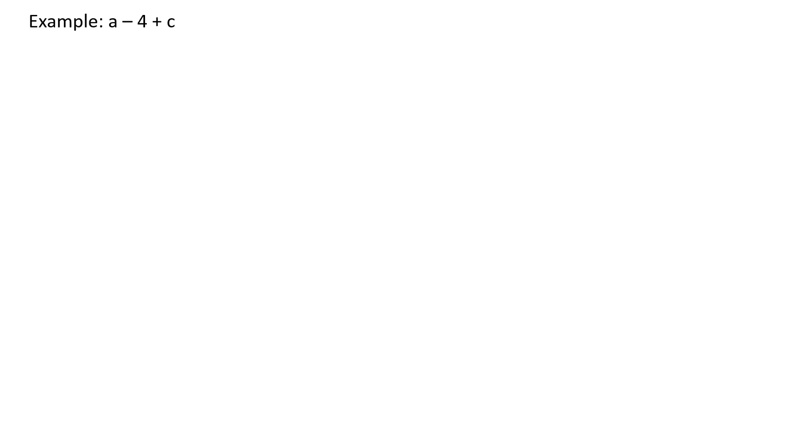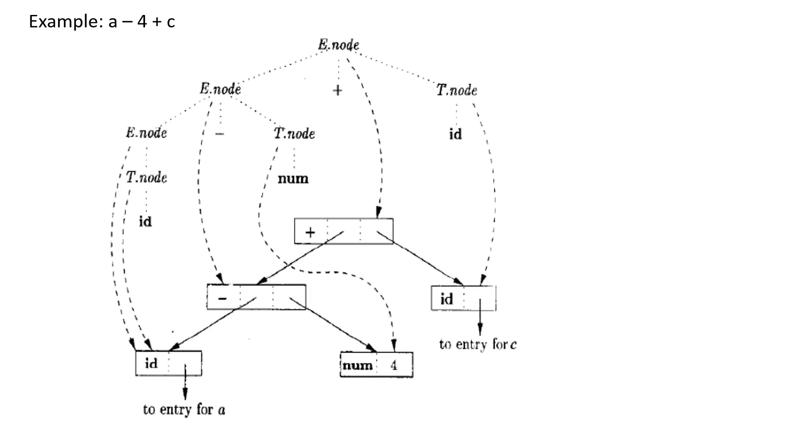For example, we have a minus 4 plus c. Using the SDD we made earlier, we created this parse tree. As you can see, these are the set of productions that we have used.